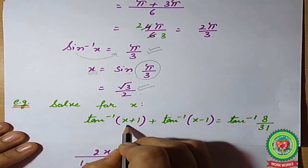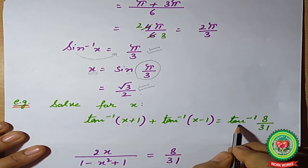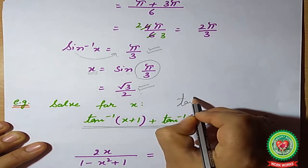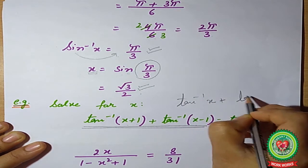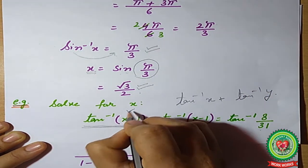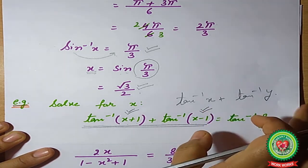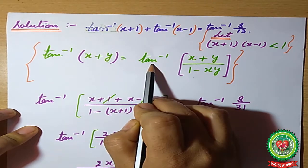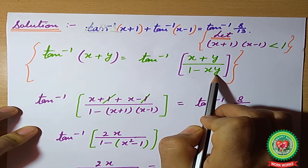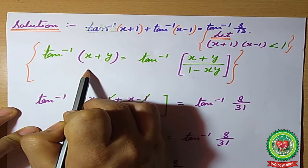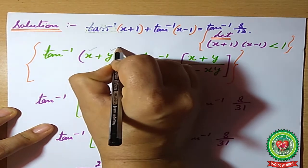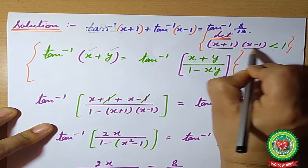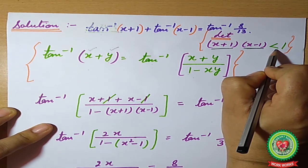Now the next example: tan⁻¹(x+1) + tan⁻¹(x−1) = tan⁻¹(8/31). We can apply the formula tan⁻¹x + tan⁻¹y = tan⁻¹((x+y)/(1−xy)), where x here is (x+1) and y is (x−1). However, for this formula there is a condition: the product of x and y must be less than 1. So we suppose that (x+1)(x−1) < 1 and keep that condition aside while we proceed with the formula.